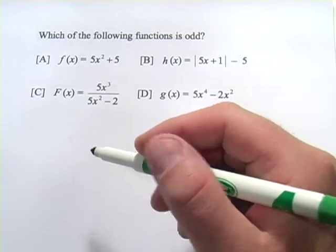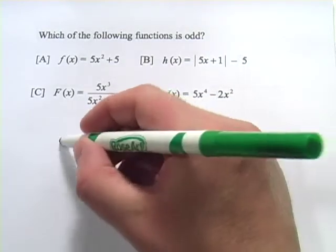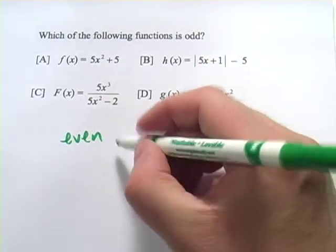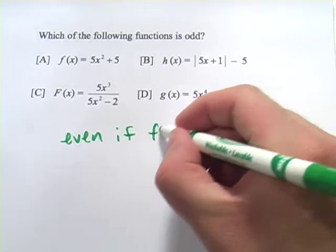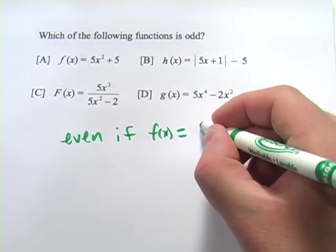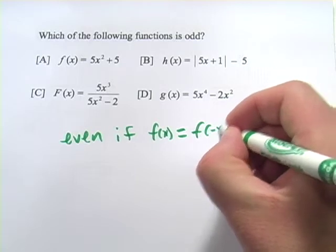One is with their properties and a little bit of algebra. An even function, a function is even if f of x, the function itself, is the same as f of negative x.